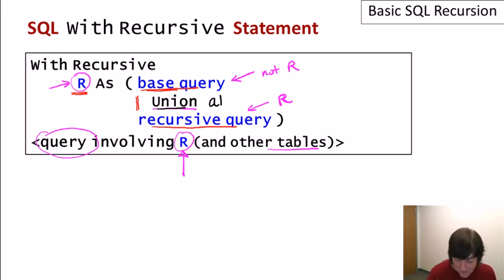As you can imagine, if I wrote union all instead, then I'm continuously adding new tuples and my recursion will typically not terminate. So it's not common, maybe never, to see union all used in recursion, but rather the duplicate eliminating union operator.